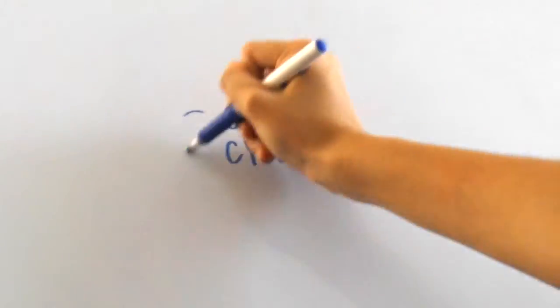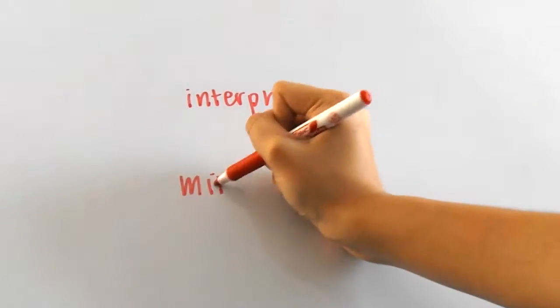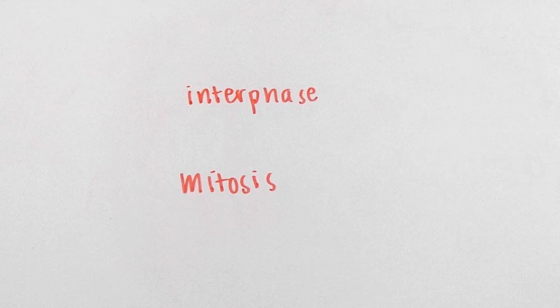Hey guys, so today we're going to look at a brief overview of the cell cycle and its phases. The cell cycle can be seen as two main phases, interphase and mitosis.